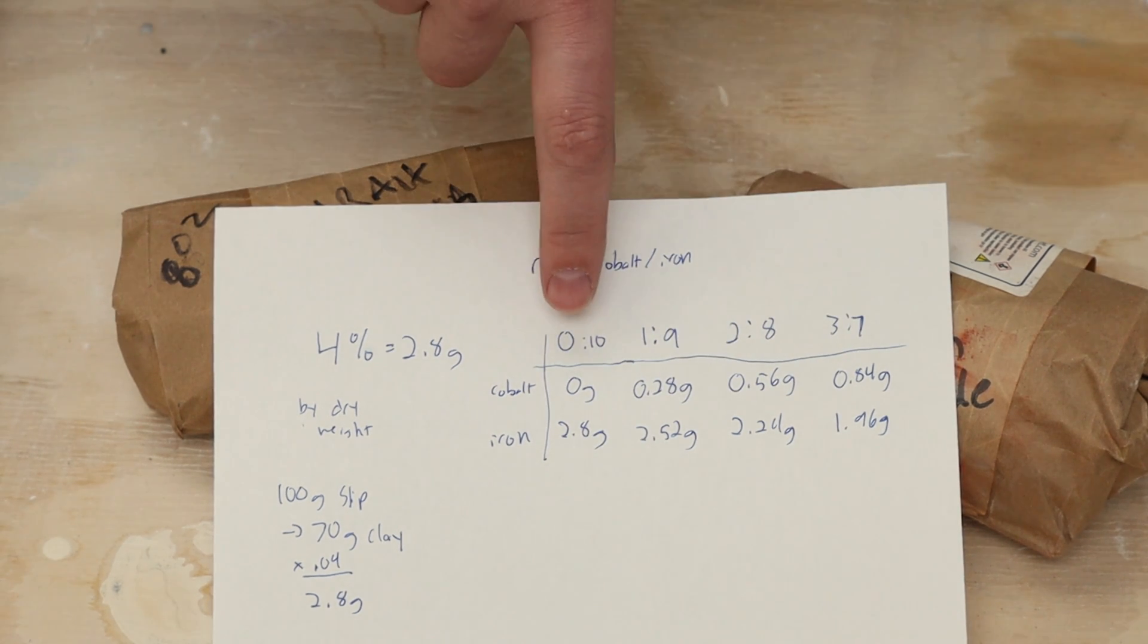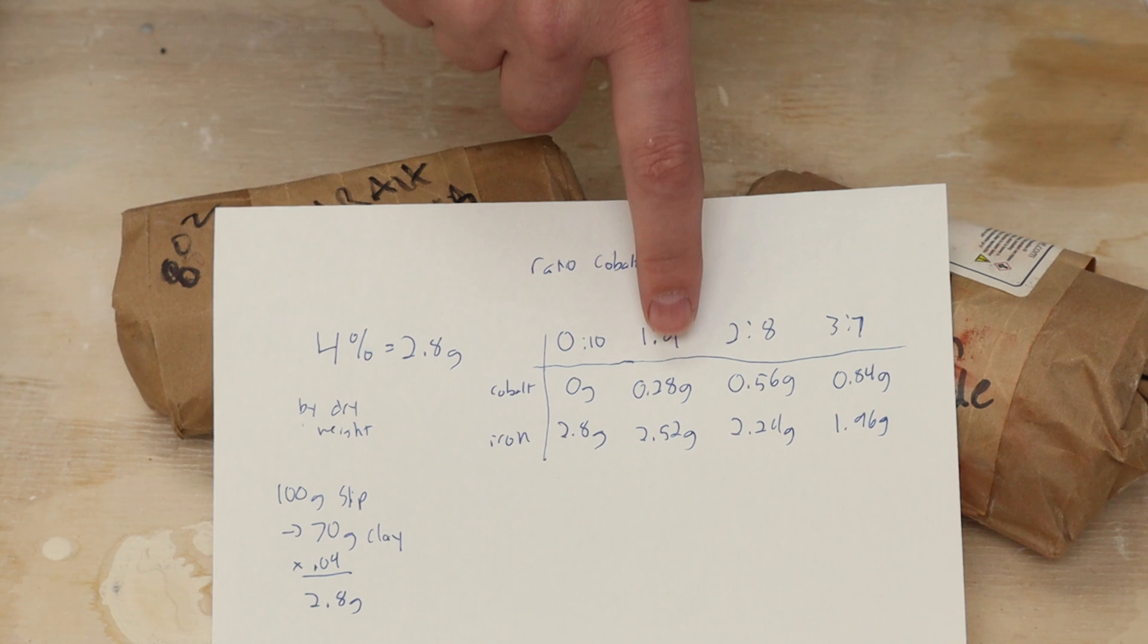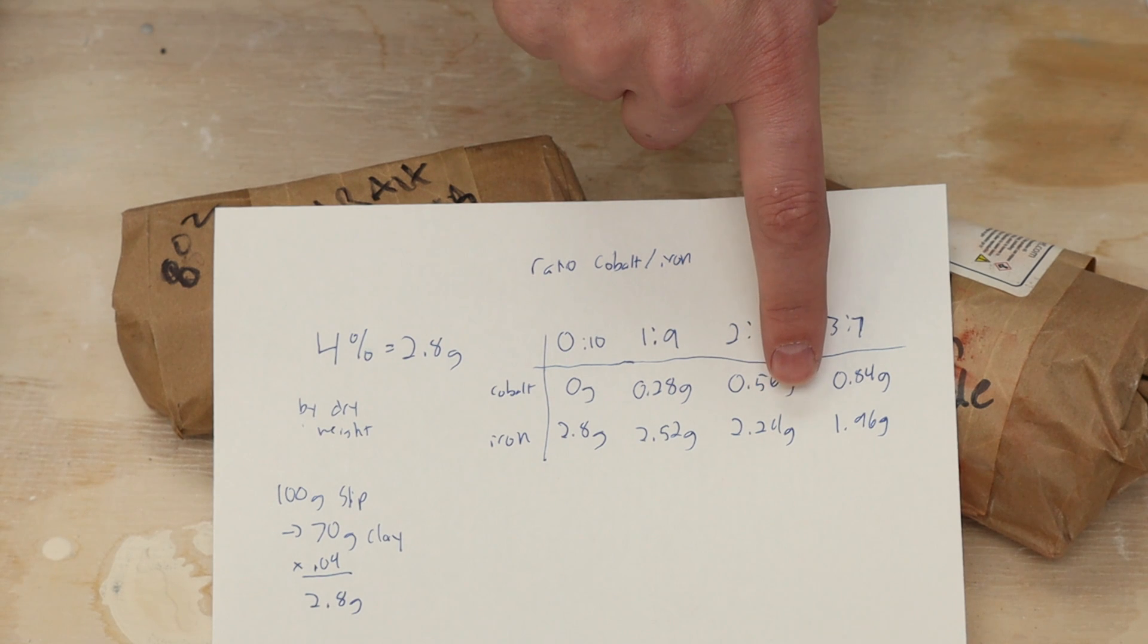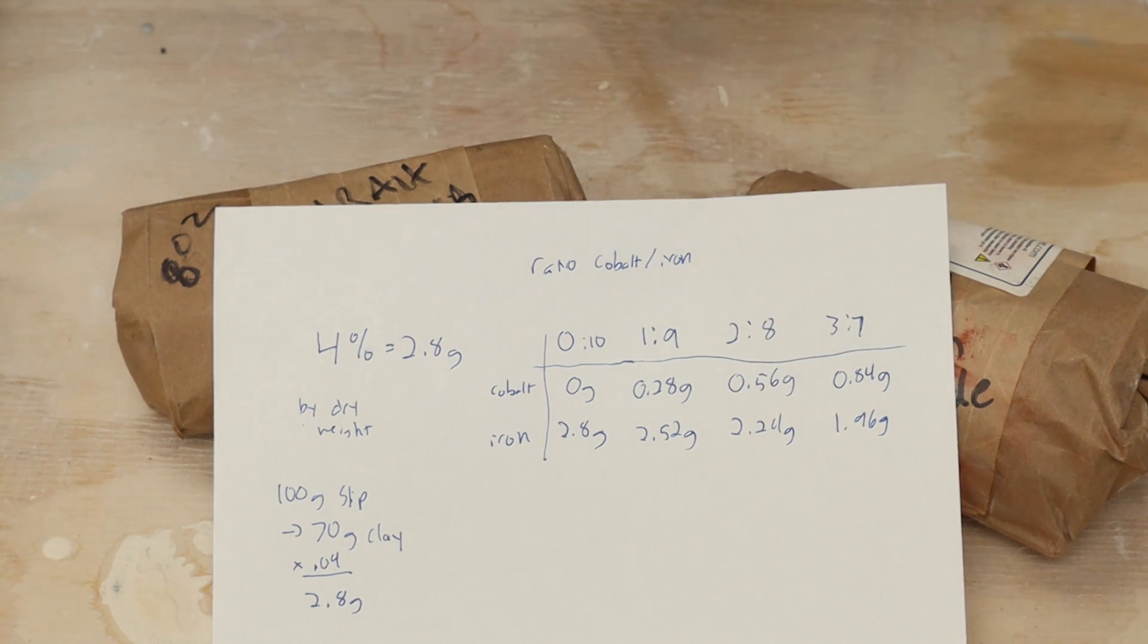Each of these columns will be a different test tile I'll make. I'm going to make four of them. First I'm just going to try the straight up iron oxide. That'll be 2.8 grams of just the iron oxide. I'm going to do one part of cobalt to nine parts of iron oxide and then two parts and then three parts of cobalt respectively to eight and seven parts of iron oxide.